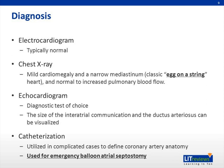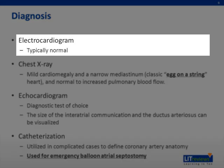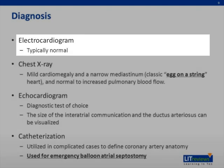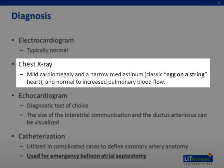Making an accurate and timely diagnosis of transposition of the great arteries is extremely important. A 12-lead electrocardiogram is typically normal, so a normal ECG never rules out congenital heart disease. The chest X-ray will show mild cardiomegaly and a narrow mediastinum, giving it the classic egg-on-a-string heart appearance.